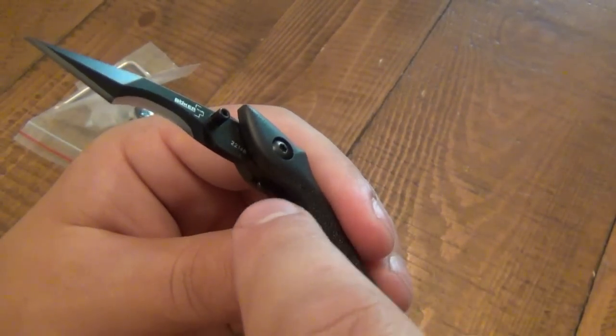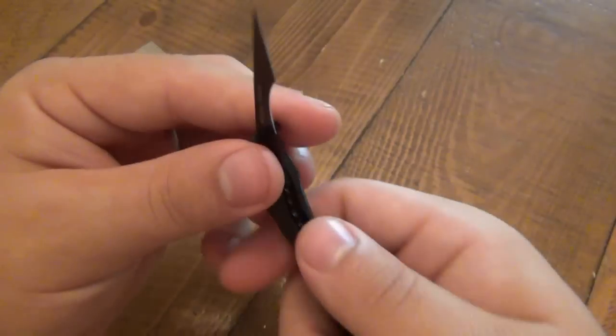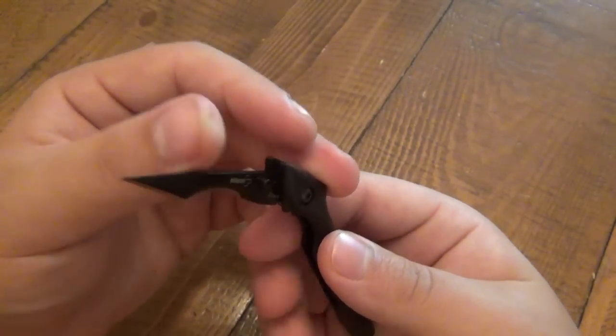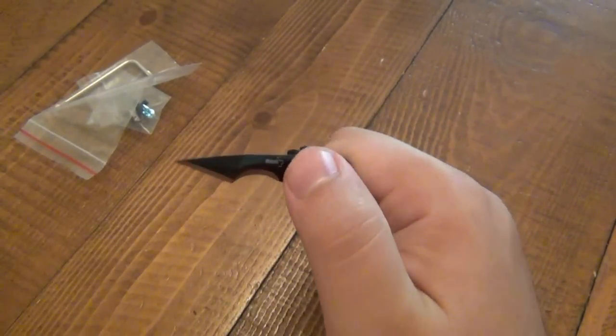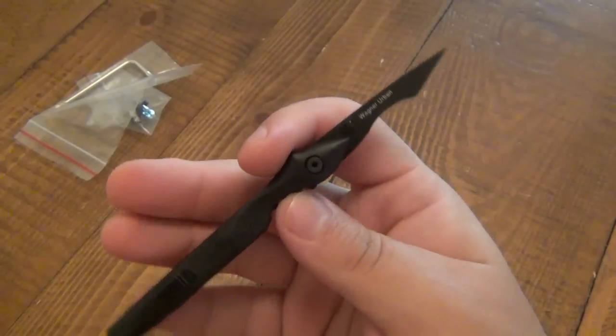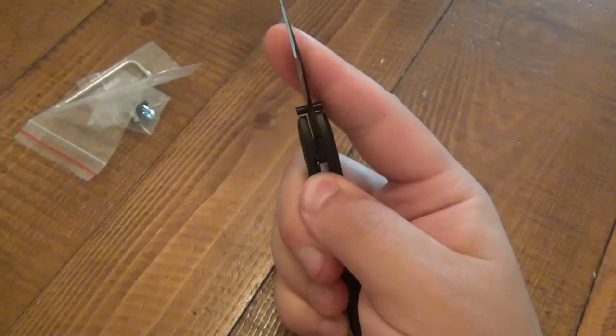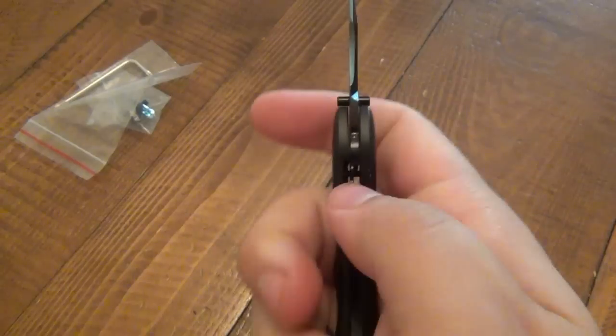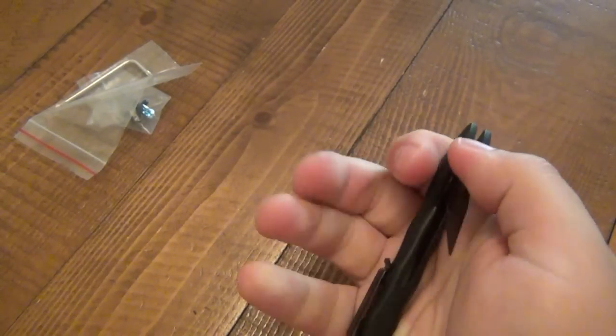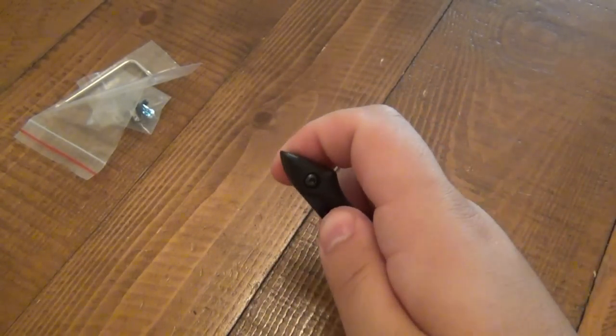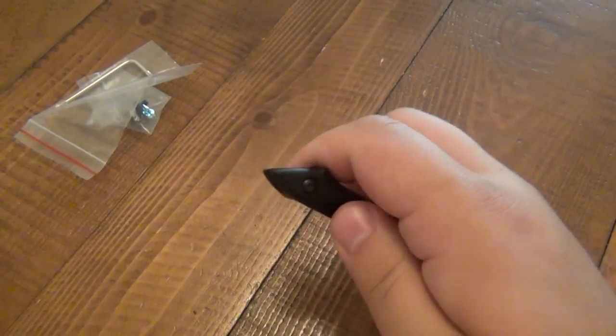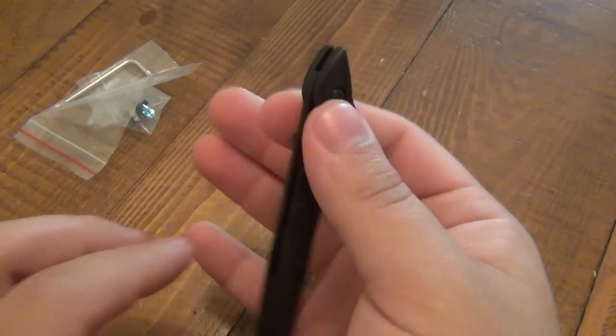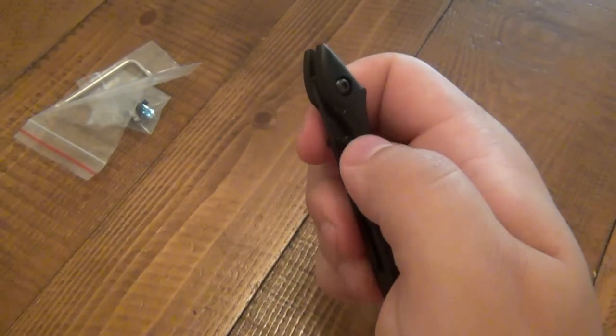When you're opening this knife, there's a little bit of resistance and then right there, you can hear it. It's almost like a click. That's the liner lock dropping. And it's just, it's not that big of a deal. It's just when you're opening this one hand with this design, it just makes it a little bit difficult.